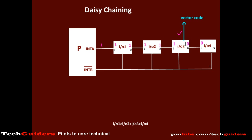Now, while the processor is servicing the request from device 3, suppose a higher priority device — say device 1 — raises its interrupt. How is this priority-based nested interrupt handling made possible with the daisy chain approach? If a high priority device needs to interrupt, it can stop propagating the high acknowledgement signal to the next device by keeping its output low. The low acknowledgement signal will then serially propagate through all the devices and finally reach the device being serviced. Seeing a high-to-low transition on its input, this device can stop servicing its interrupt, and control will be transferred to the higher priority device.